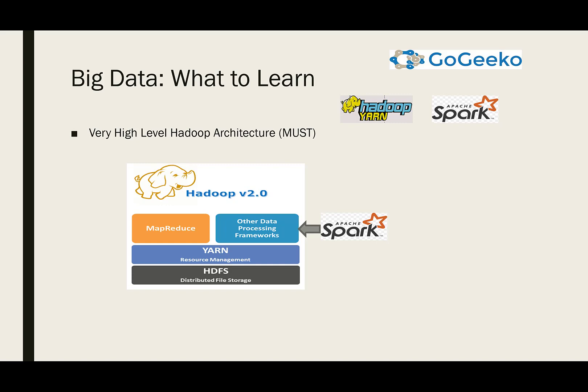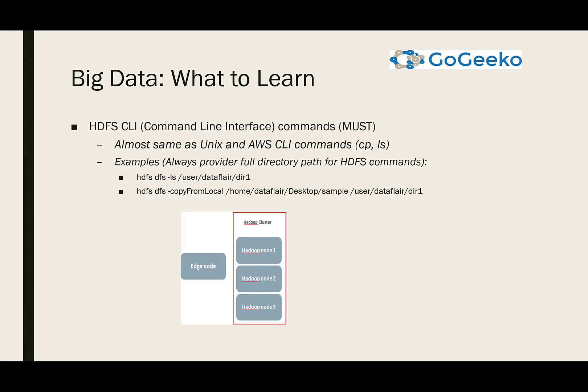I'd like to cover some of the main products in Hadoop you should know. First, you should know Hadoop architecture at a high level — this is a must. There is HDFS, there is YARN which is a resource manager, and on top of that you have processing engines like Spark or MapReduce. Mostly people use Spark now, and when we say MapReduce it's really Hive SQL.